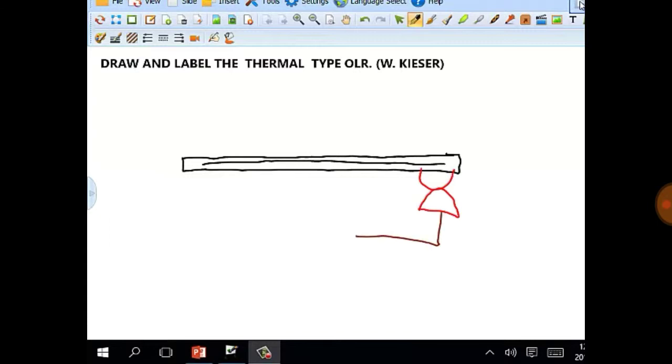Let's label this thermal type overload relay fully. Remember, there are four main parts to this diagram.